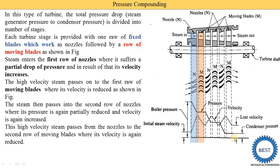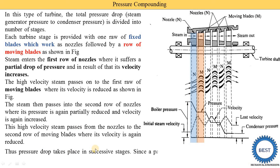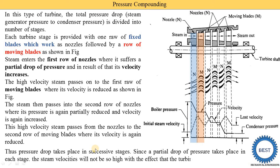The same process repeats: in the nozzle, pressure is reduced and velocity is increased; in the moving blades, pressure is constant and velocity is reduced. At the final stage, we achieve the condenser pressure at the outlet, and the remaining velocity is lost to the condenser. Thus pressure drop takes place in successive stages — since only a partial drop of pressure takes place at each stage, the steam velocity will not be too high, and the turbine will run slower.